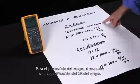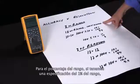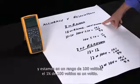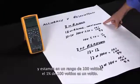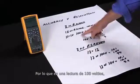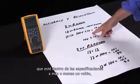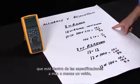For percent of range, if we have a one percent specification of range and we're on a hundred volt range, one percent of a hundred volts is one volt. So that means with a reading of a hundred volts that can be within specification at plus or minus one volt.